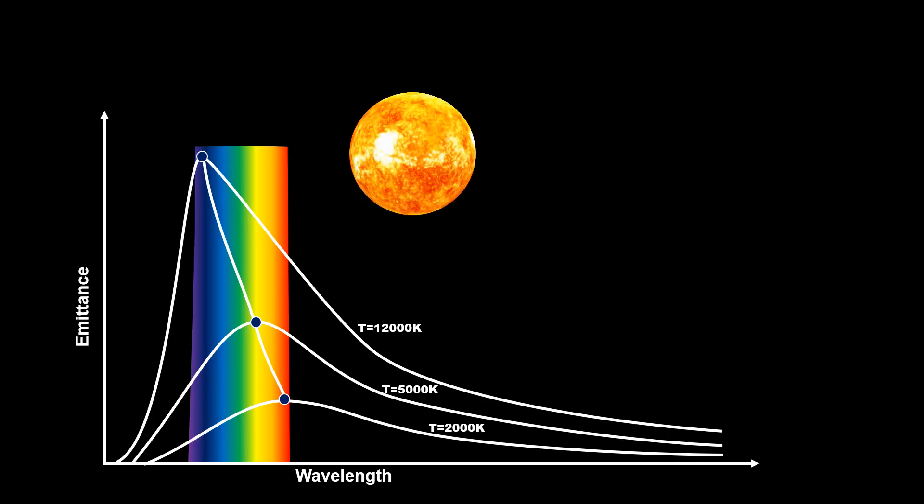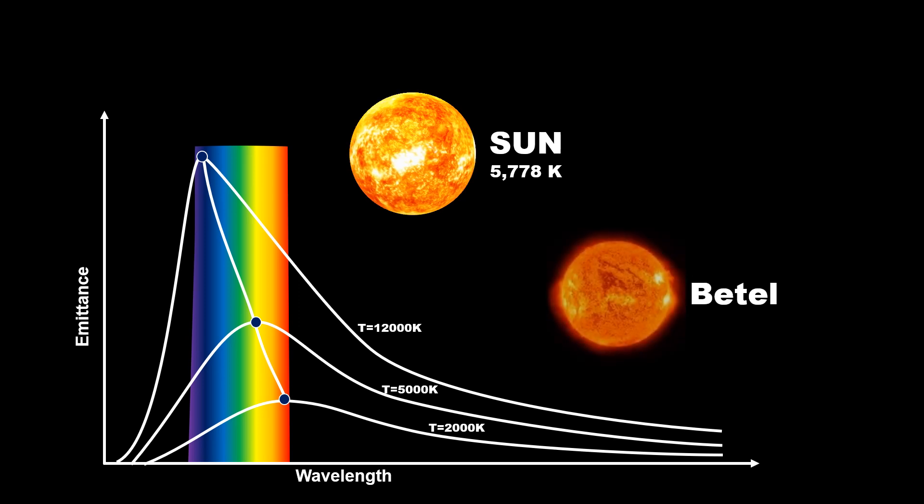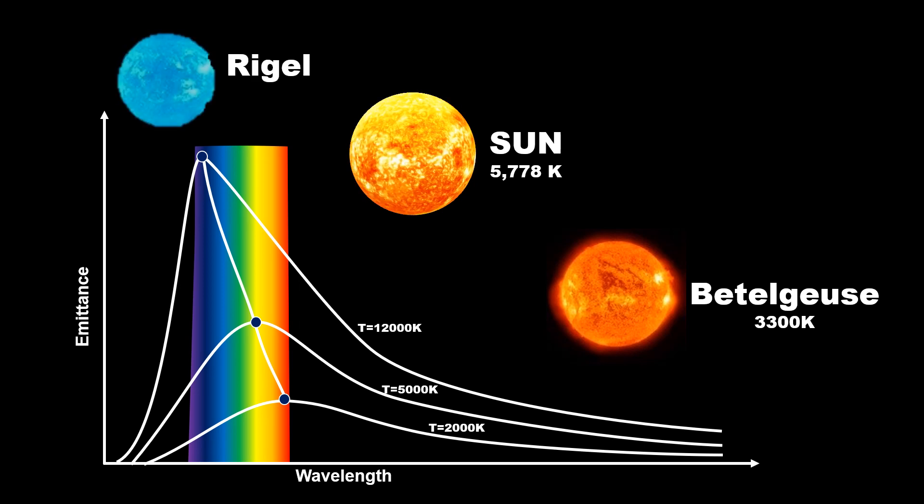Since the temperature of the Sun is 5778 Kelvin, it comes in the yellow-green portion of the spectrum. The Orion constellation has two stars. Betelgeuse, which is a red color star, has a temperature of 3300 Kelvin, and Rigel is a blue giant star with a temperature of 12100 Kelvin. Therefore, it can be said that the temperature of the blue star is higher than the red star.